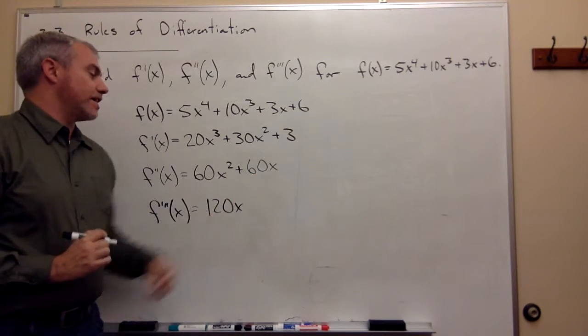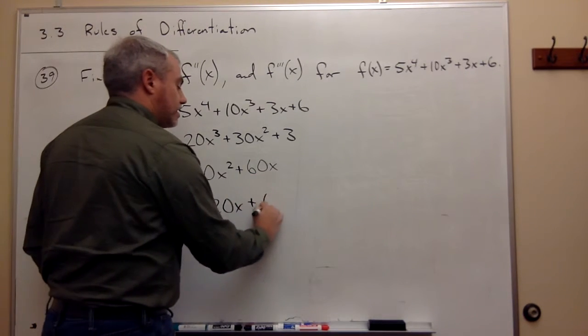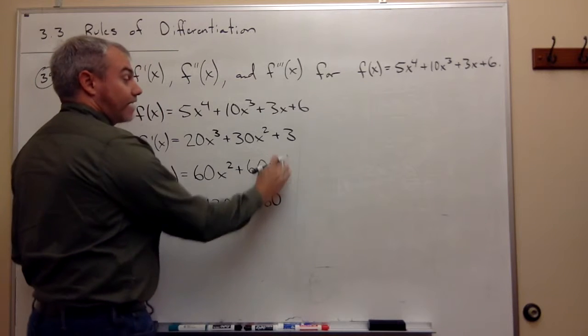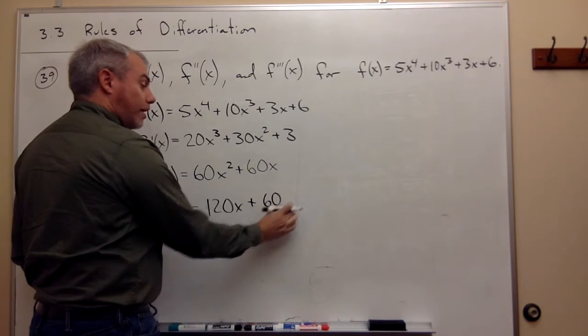and the derivative of 60x is 60. It would be x to the zero power, which is 1, so it's just 60.